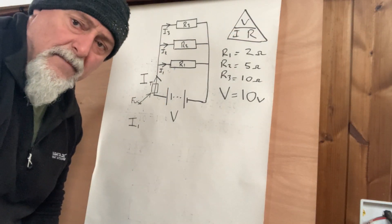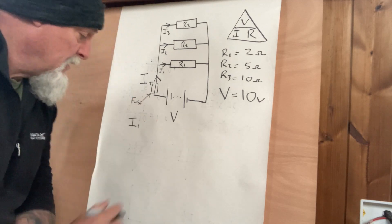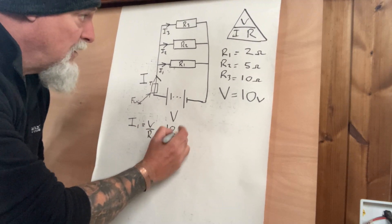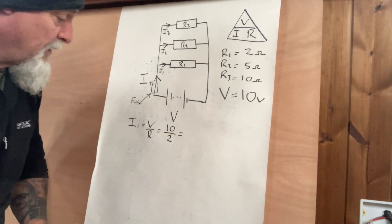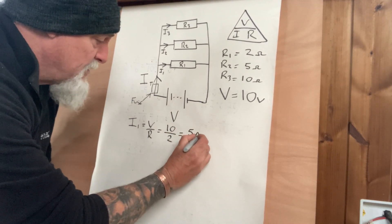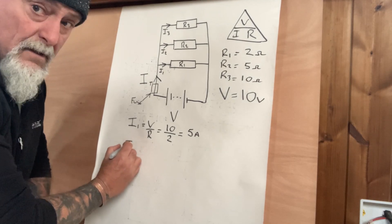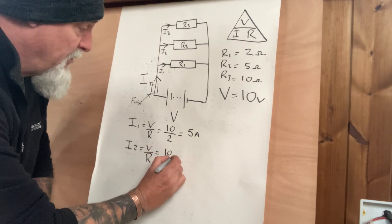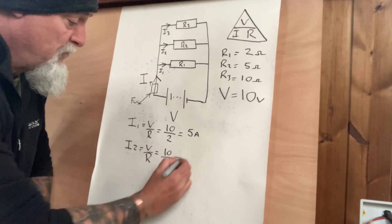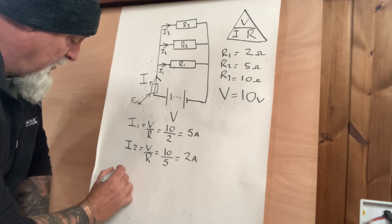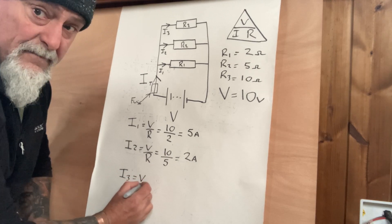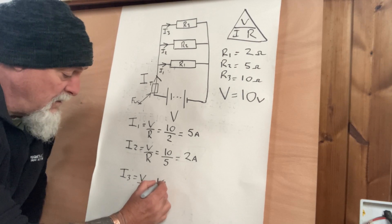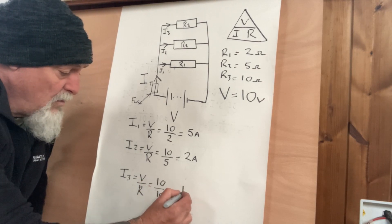So we're going to work out the current for I1, and then we can just add all the currents up. And that is 10 over 2, pretty sure that would be 5 amps. I2 is also V over R, so 10 divided by 5, pretty sure that would be 2 amps. And I3, again, V over R equals 10 over 10, so 1 amp.